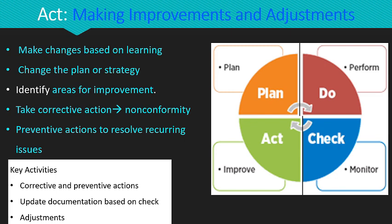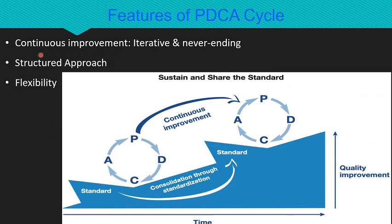Now let us look at some key features of the PDCA cycle. The first feature is continuous improvement — as shown in the figure, the PDCA cycle is a continuous loop or iterative process ensuring ongoing improvement and refinement. At every iteration we are always getting better and better. The second feature is that it is a structured approach, providing a clear step-by-step framework for solving problems by sequentially planning, doing, checking and acting to refine processes, products and services.